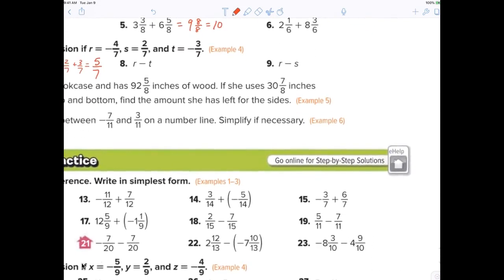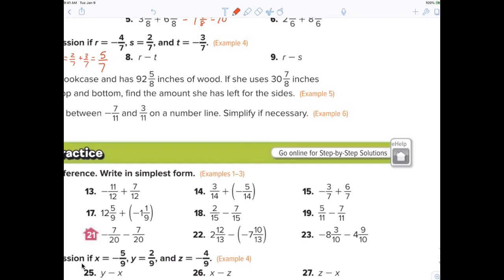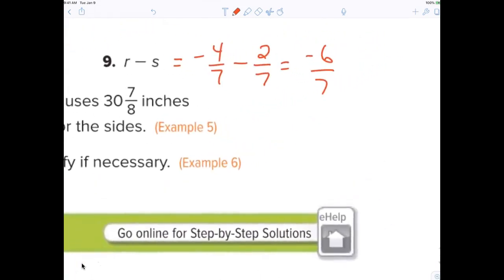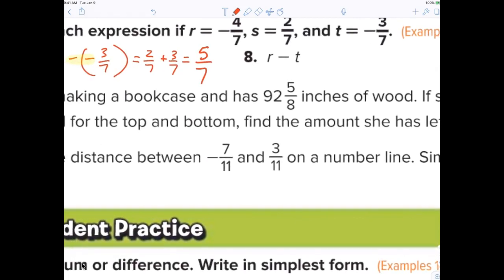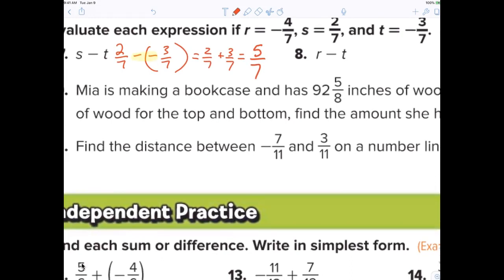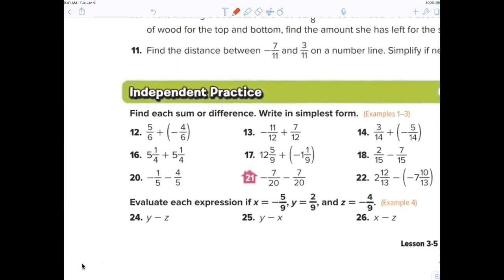Now I'm on number 9. What's R? R is negative 4 over 7 minus 2 over 7, which is negative 6 over 7. Everybody comfortable with that so far? Now I'm on 13.